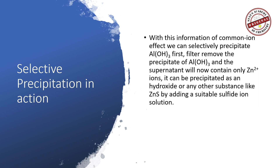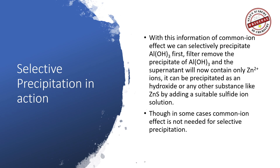Selective precipitation is used extensively in qualitative analysis. For instance, when testing water for the presence of different metal ions or anions, we can use selective precipitation to precipitate one ion at a time and detect different metals that may be present in drinking water. In many cases, simply knowing the KSP values is sufficient to selectively precipitate certain ions without necessarily applying the common ion effect.